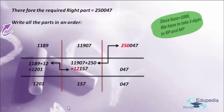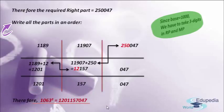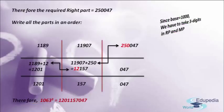By combining all the answers from all the parts, we get the final answer. Therefore, 1063 cube is equals to 1,201,157,047. This is the way how we can use Yavadunam Sutra in finding the cube of a given 4-digit number. I hope you have understood how to use Yavadunam Sutra as well as Anurupena Sutra. In the next session we are going to have some more examples regarding the same concept. Thank you for watching this video. Have a nice day.